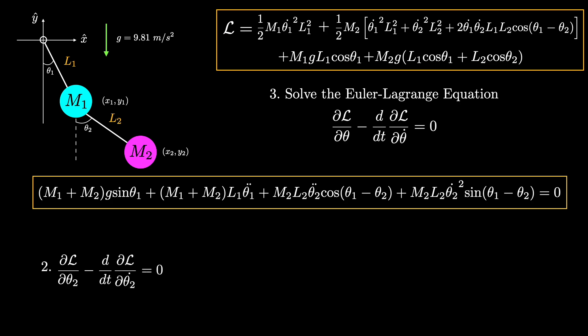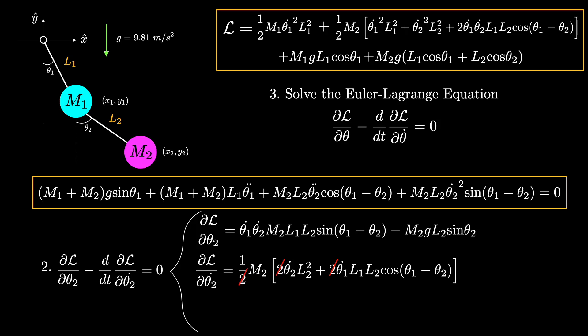Now let's do the same for theta2. Again, starting with the first term, partial L by partial theta2 equals this, which can be further simplified as before. And for the second term, partial L by partial theta2 dot is this. And d by dt of this results in the following.